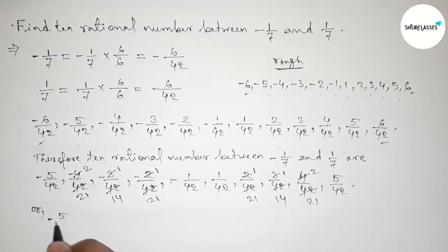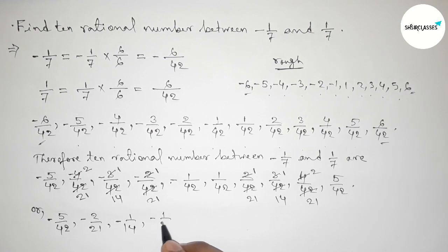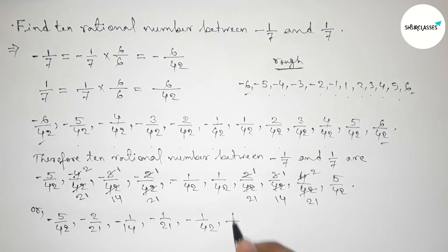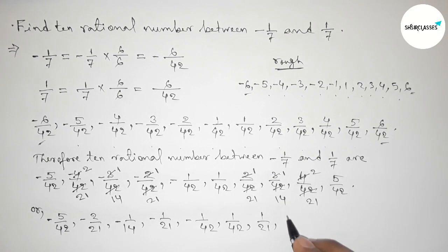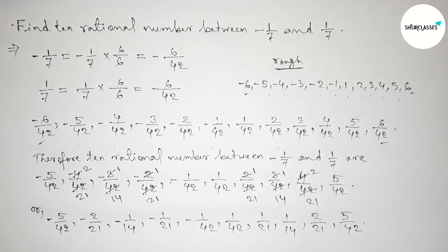So writing down all the simplified rational numbers: minus 5 by 42, then minus 2 by 21, then minus 1 by 14, then minus 1 by 21, then 1 by 42, then 1 by 21, then 1 by 14, then 2 by 21. That's all, thanks for watching.